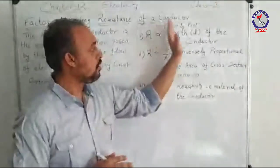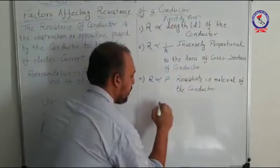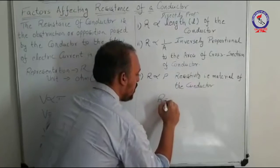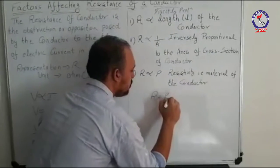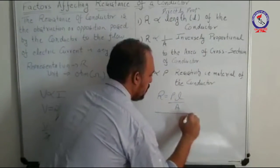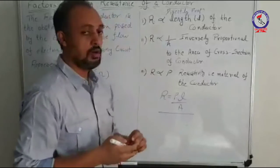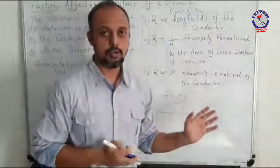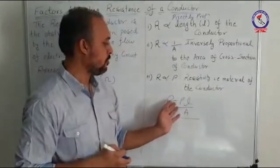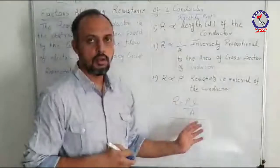Combining all three parameters, we get the expression R equals rho L by A. So the expression for resistance is R equals ρL/A, where ρ is the resistivity, L is the length, and A is the area of cross-section of the conductor.